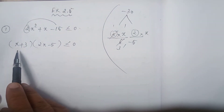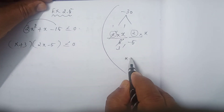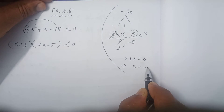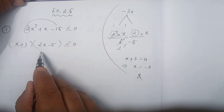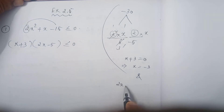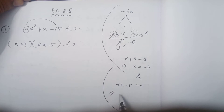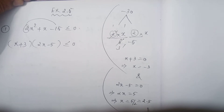Now consider x plus 3 equals 0 and find the value of x. If x plus 3 equals 0, then x equals minus 3. Next, 2x minus 5 equals 0, which implies 2x equals 5, so x equals 5 by 2, that is 2.5.